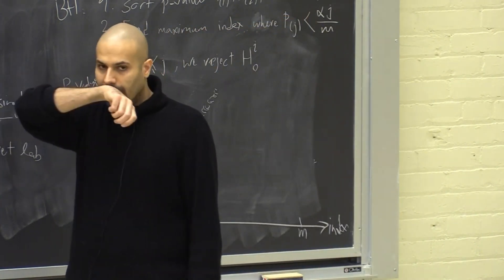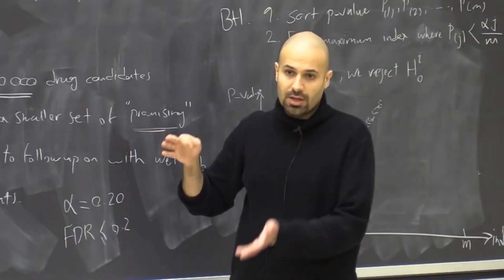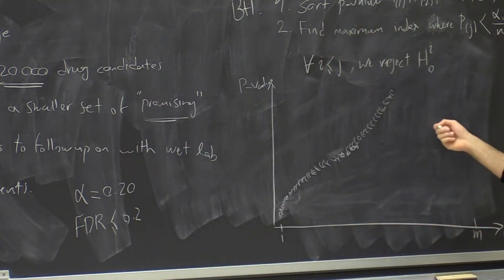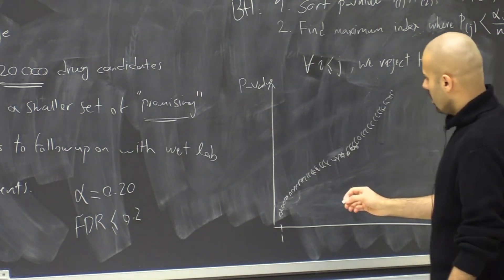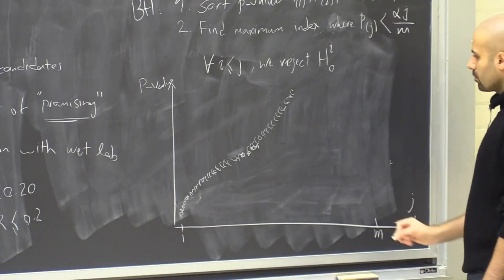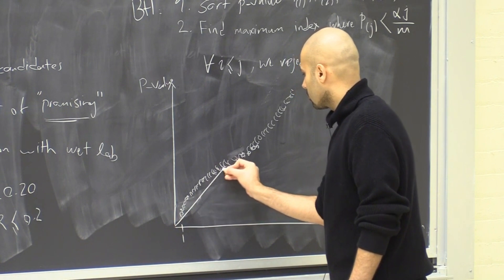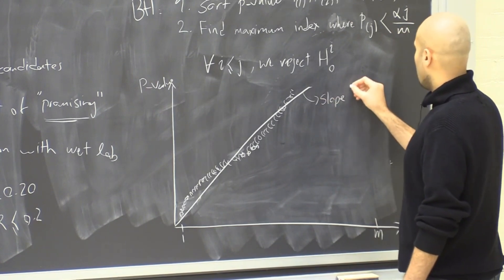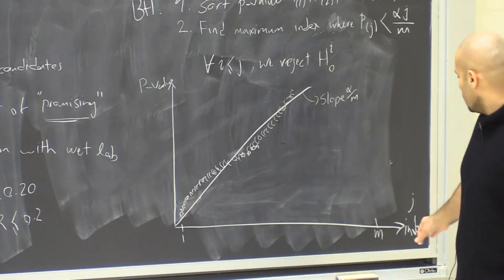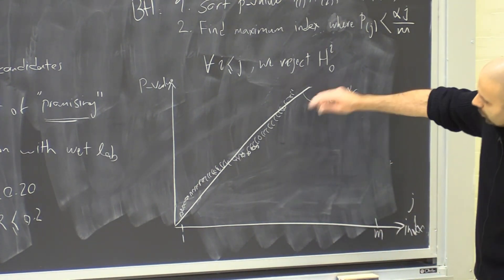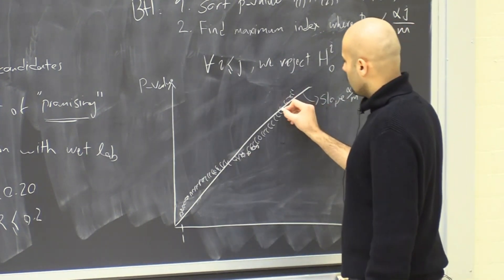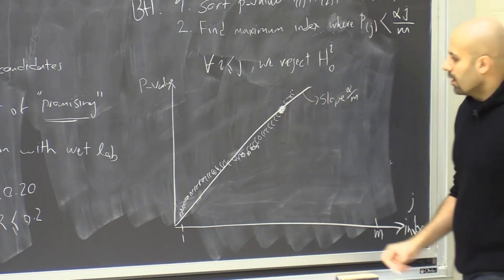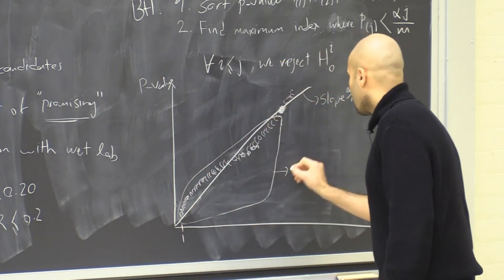But this FDR method is usually for situations where M is so large that with Holm or Bonferroni, we cannot reject any of the null hypothesis, actually. So if you are trying to be too conservative with this idea of finding promising candidates, just M is so large that when we start by dividing alpha by 20,000, that baseline on the right-hand side becomes so tiny that no p-value is less than that. So then we're not going to have any candidates for follow-up with lab experiments.